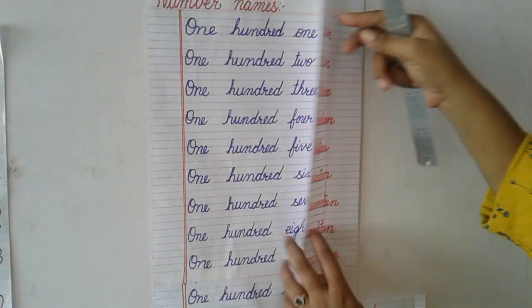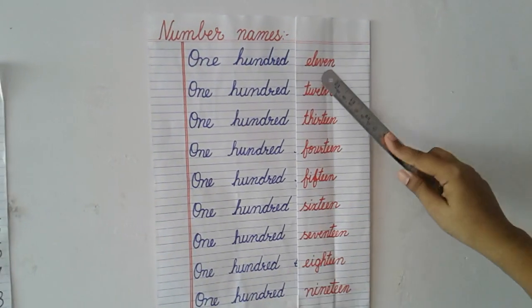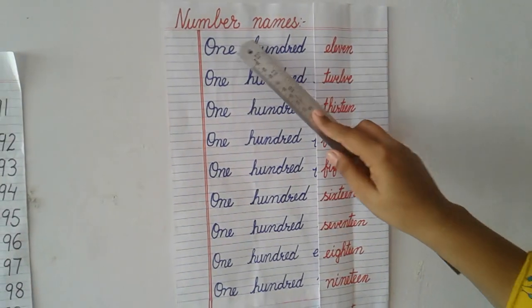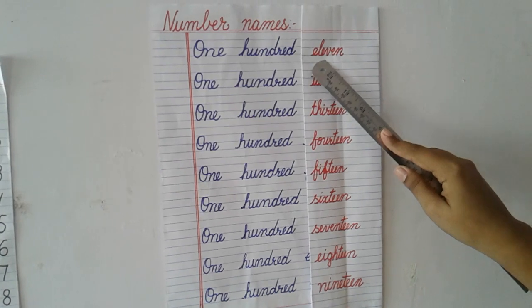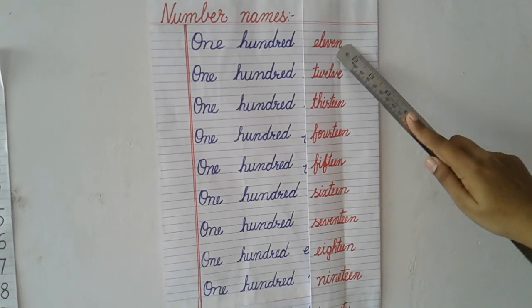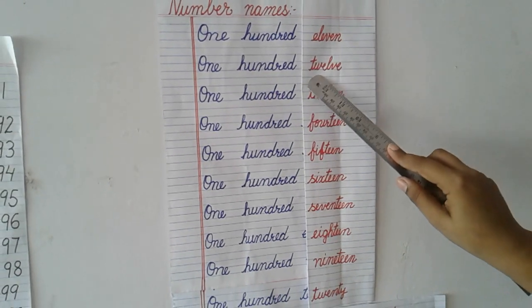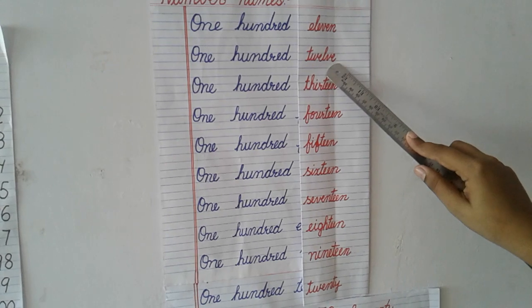Now we will see the spelling from 11 to 20. ONE HUNDRED ELEVEN. ONE HUNDRED TWELVE.